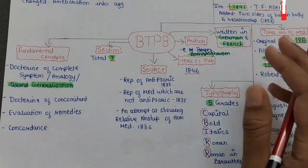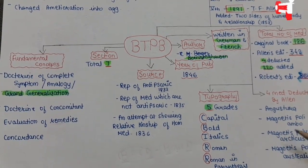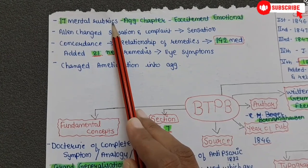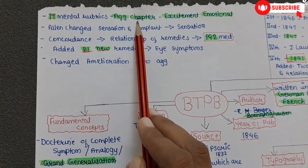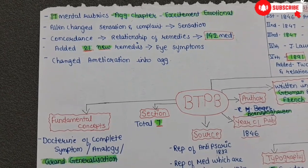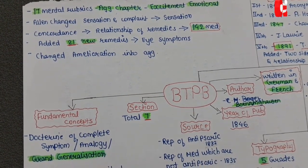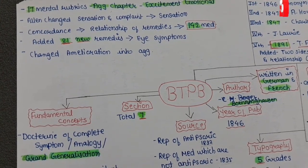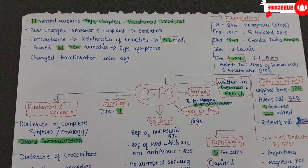MCQ questions from BTPB are asked on the year, the sources, translation, total number of medicines, and the four medicines deducted by Allen. Other changes in Allen's edition: there are 17 mental rubrics, but they were included in the Aggravation chapter under the heading 'Excitement Emotional.' Allen changed 'Sensation and Complaints' to only 'Sensation.' Concordance was changed to 'Relationship of Remedies.' He added 21 new remedies in Eye Symptoms, and changed the chapter title 'Amelioration' to 'Aggravation.'